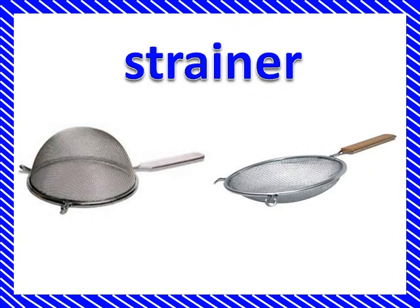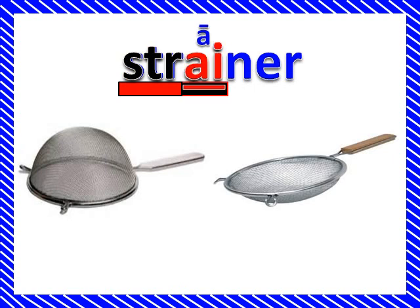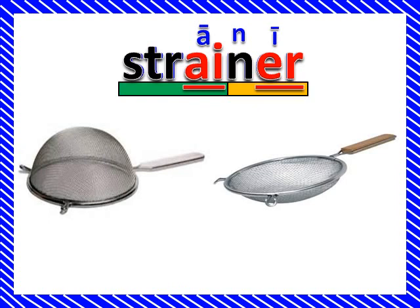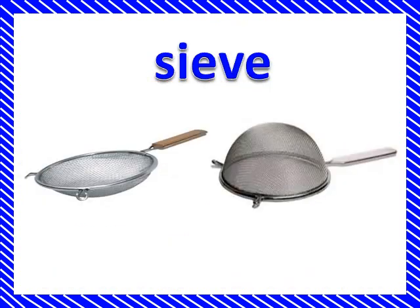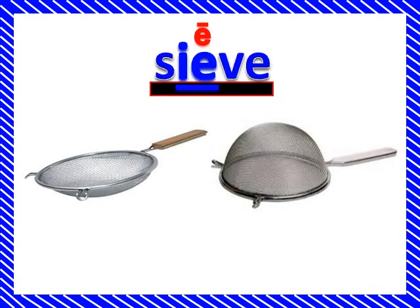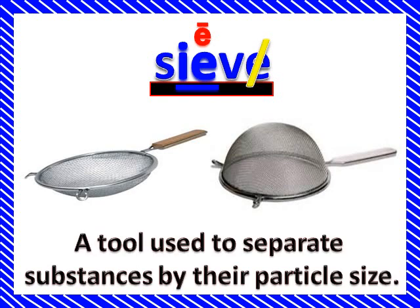A strainer is a tool used to separate substances by their particle size. A sieve is also a tool used to separate substances by their particle size. A sieve is the same as a strainer — same thing.